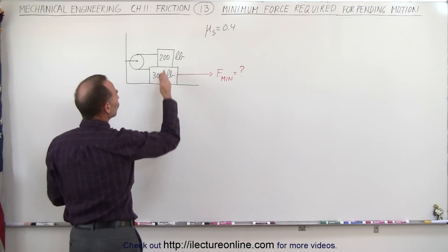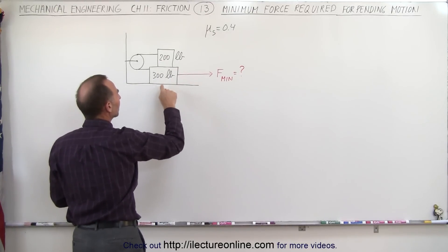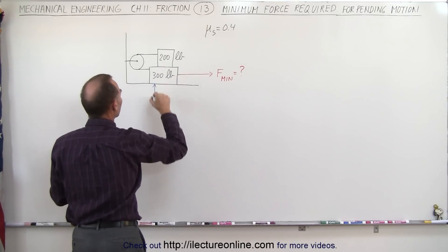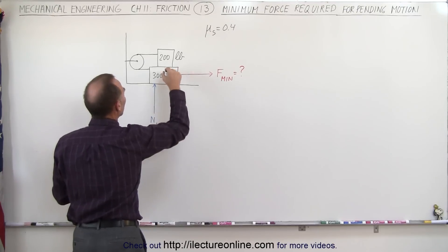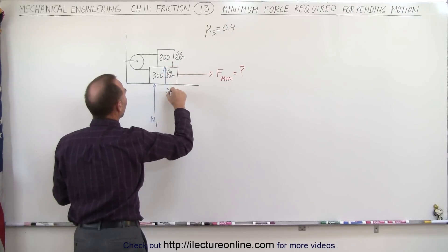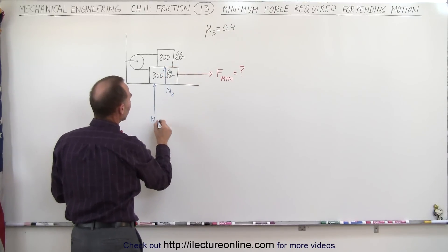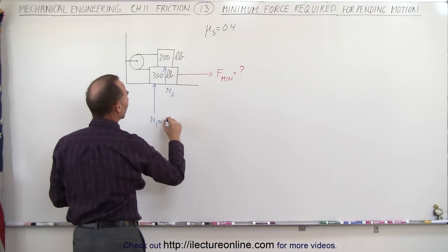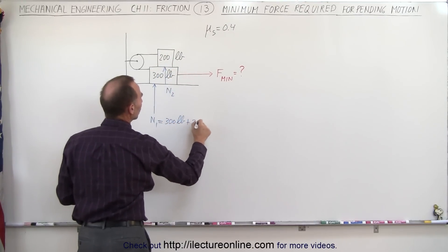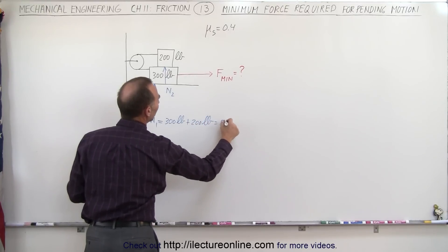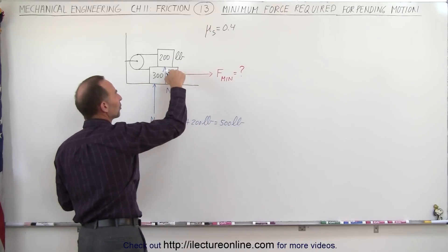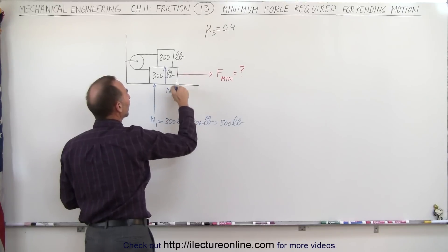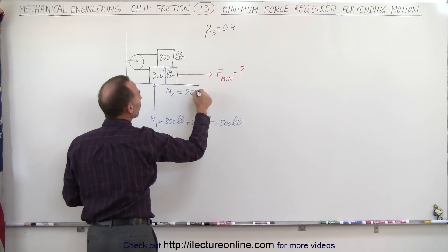First, let's determine the normal force between the floor and the first block, and between the top of the first block and the bottom of the second block. We have the normal force N1 at the floor, and the normal force N2 between the two blocks. N1 is simply going to be the weight of both blocks — both blocks are pushing down on the surface, so the surface pushes back — giving us 300 pounds plus 200 pounds, which is a total of 500 pounds. N2 is simply the force pushing back against the weight of the top block, so it's 200 pounds.